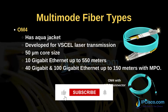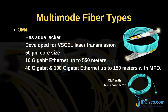OM4 has an aqua jacket too. It is developed for VCSEL laser transmission. Its core size is 50 micrometers. It supports 10 gigabit ethernet up to 550 meters and 40 gigabit and 100 gigabit ethernet up to 150 meters with MPO.